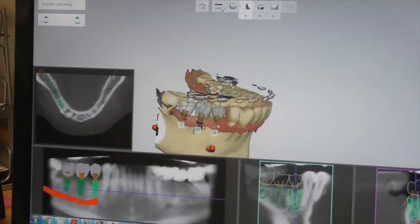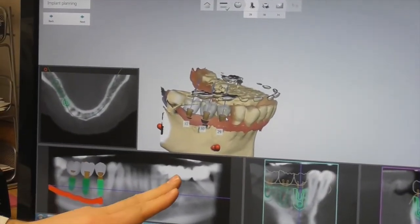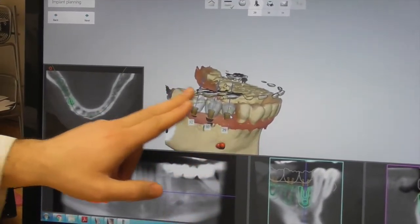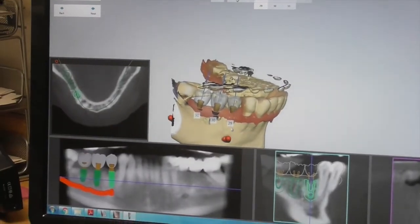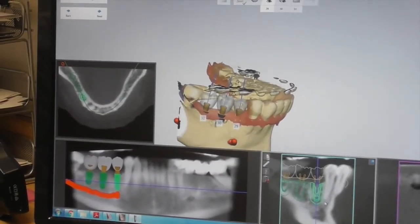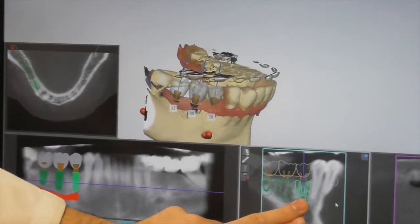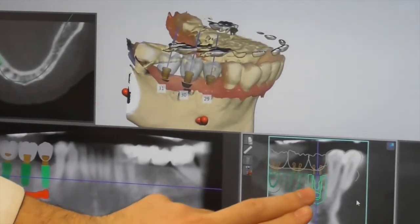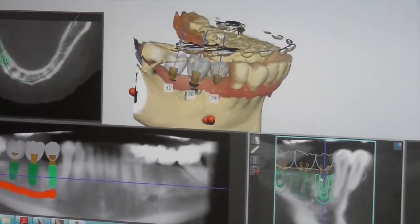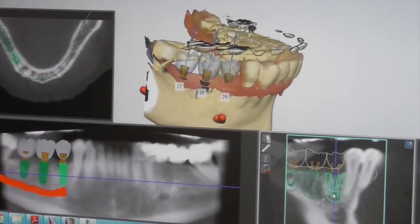The next step is to place the implants using the CT scan with the intraoral scan right on top of the bone. So now we have a situation where I can place the implants, design the crowns, and make a surgical guide so that we can precisely place the implants based off of the planning.